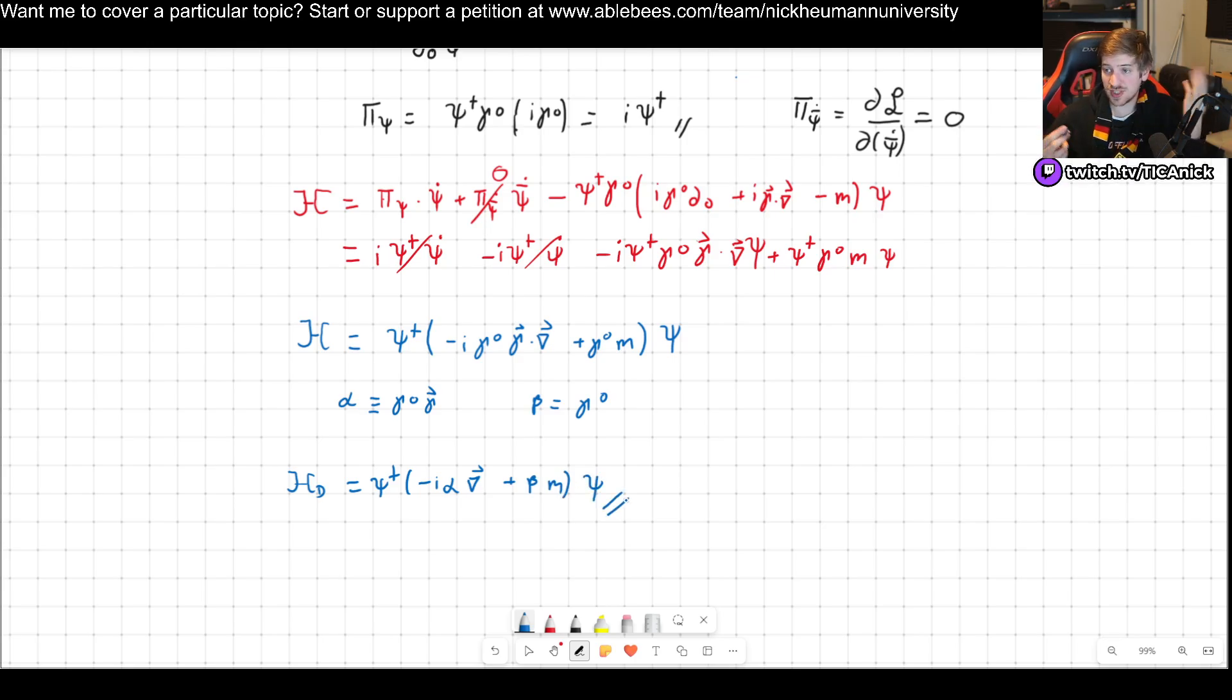So this would be psi dagger minus i alpha times the spatial derivatives plus beta m psi. And there we go, it was a relatively simple derivation, so I hope that this video was useful to you. In the next video, we are actually going to start quantizing the Dirac field, and that's going to be quite a lengthy calculation, but I know that it's going to be worth it, so I hope to see you there.